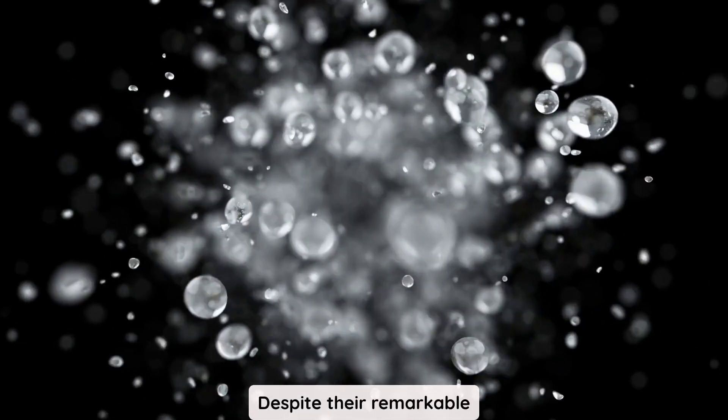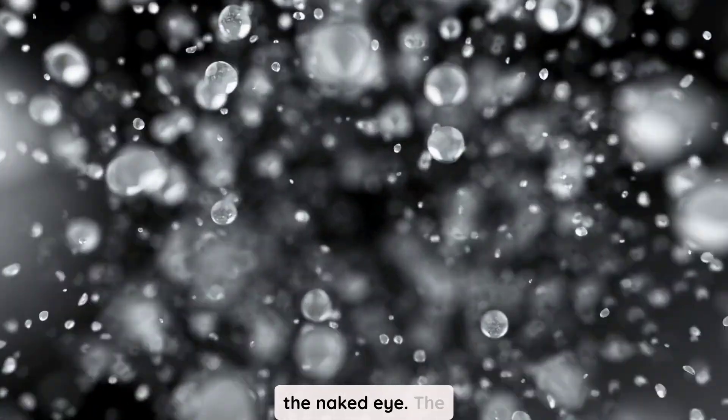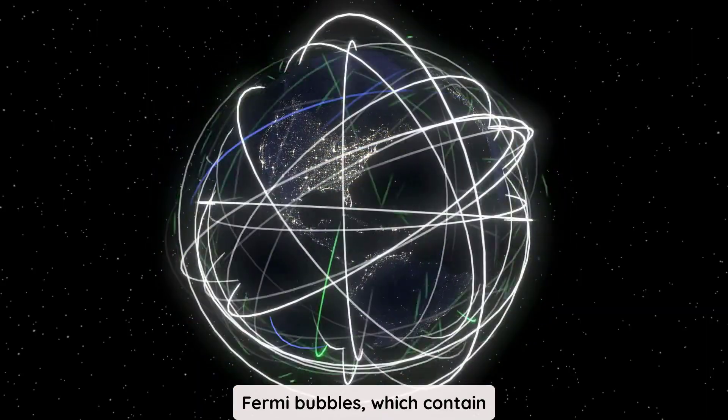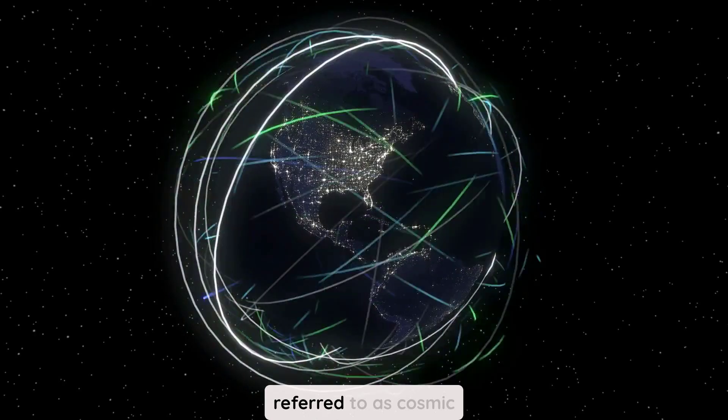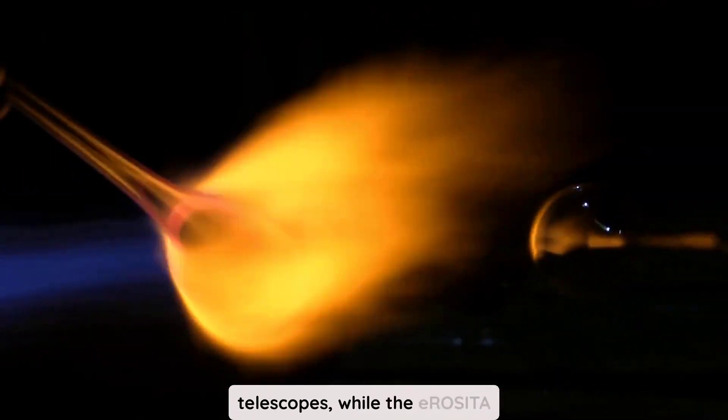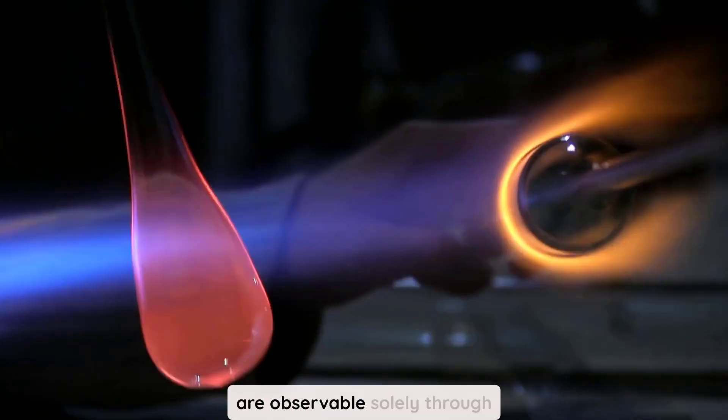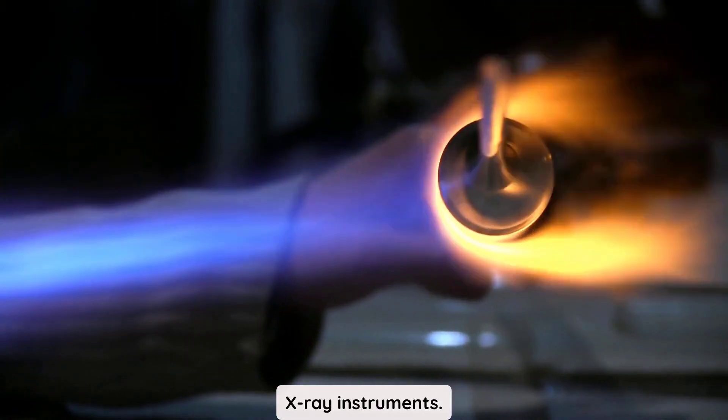Despite their remarkable dimensions, these bubbles are not visible to the naked eye. The Fermi bubbles, which contain rapidly moving particles referred to as cosmic rays, can only be detected by gamma-ray telescopes, while the Erosita bubbles, composed of extremely hot gas, are observable solely through X-ray instruments.